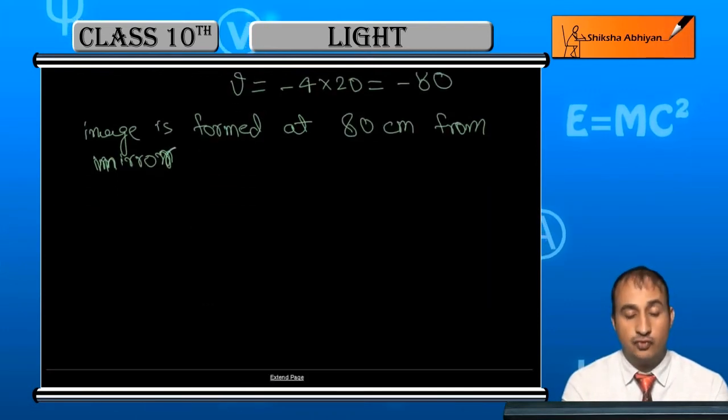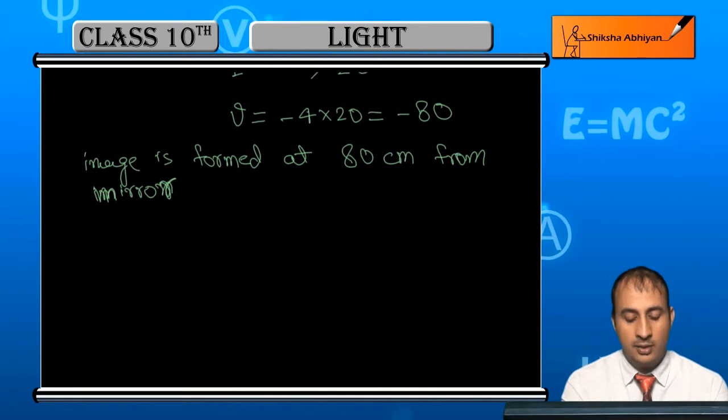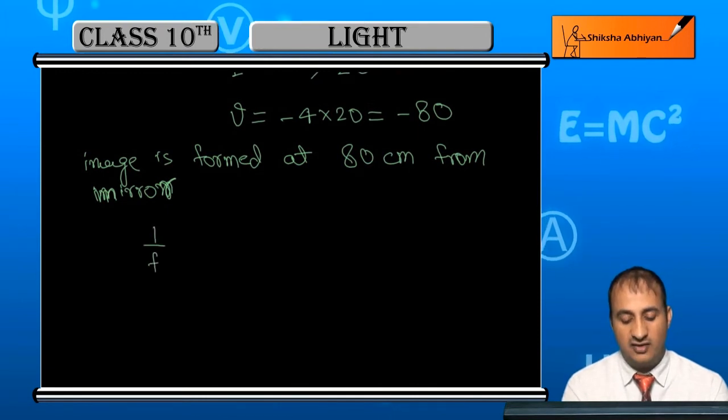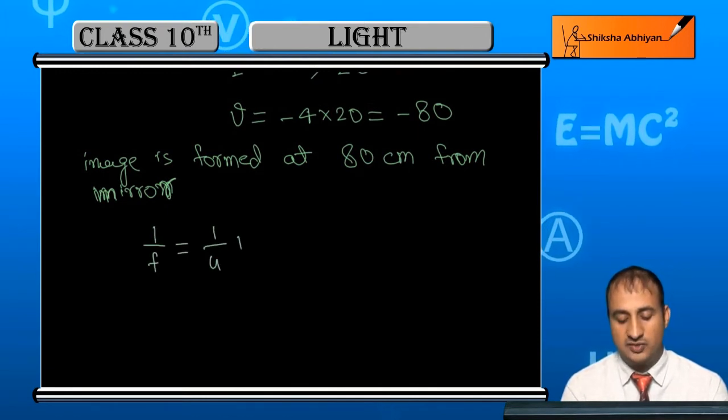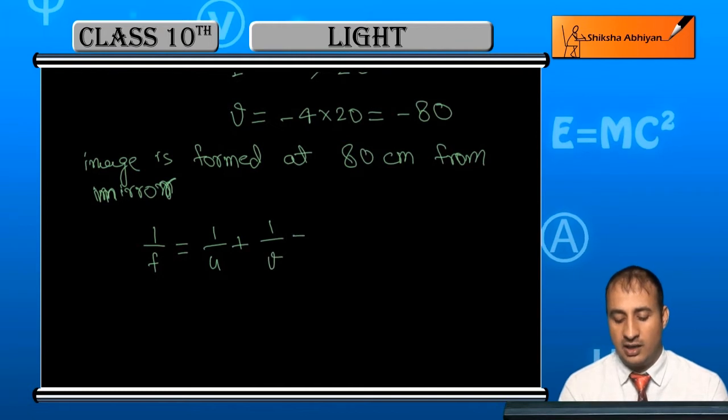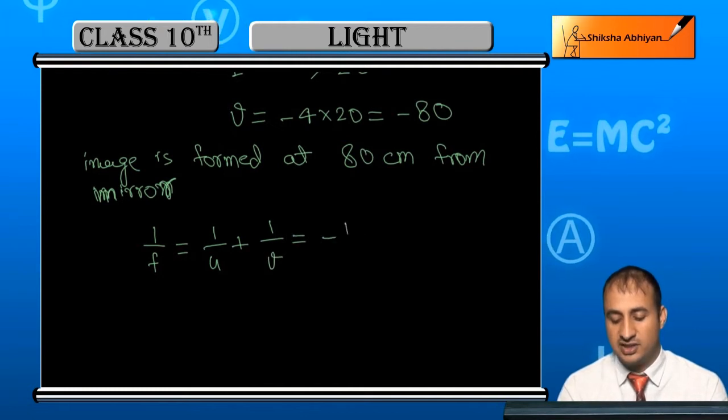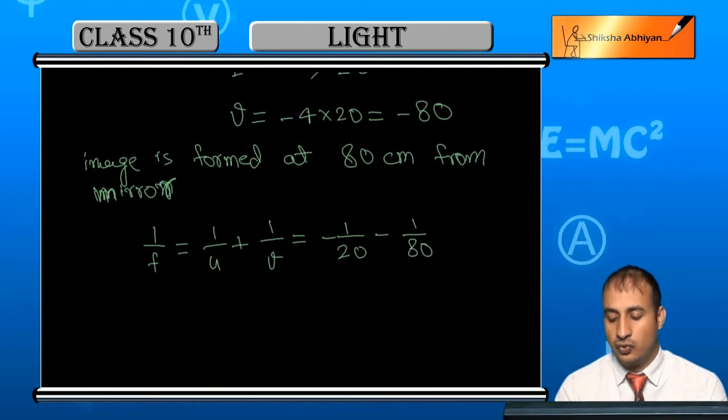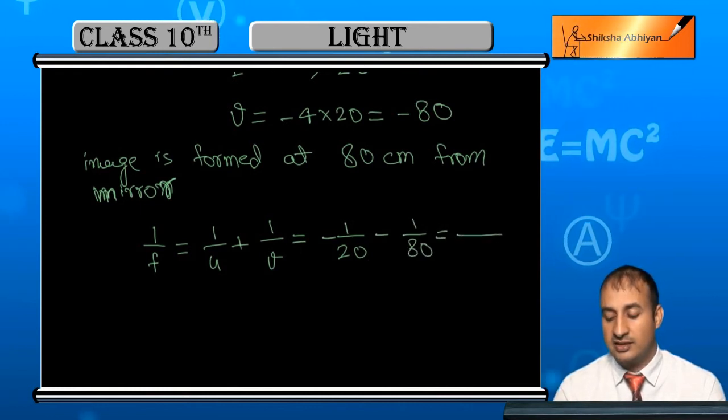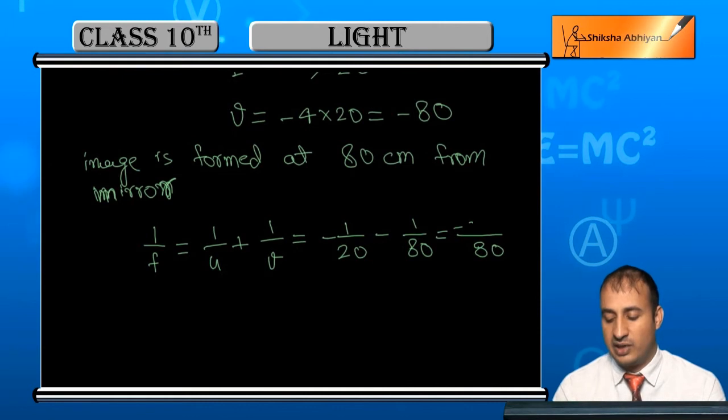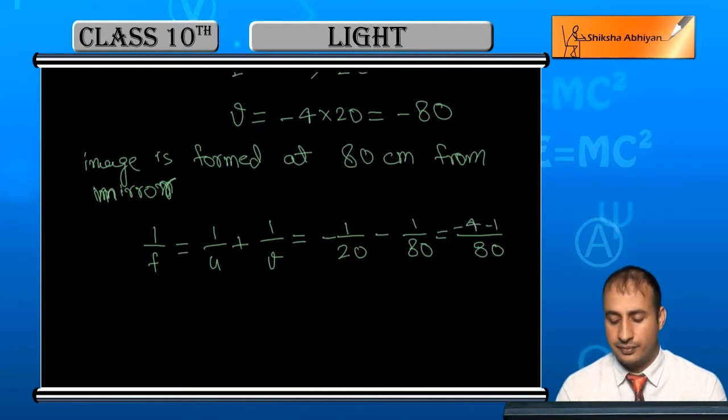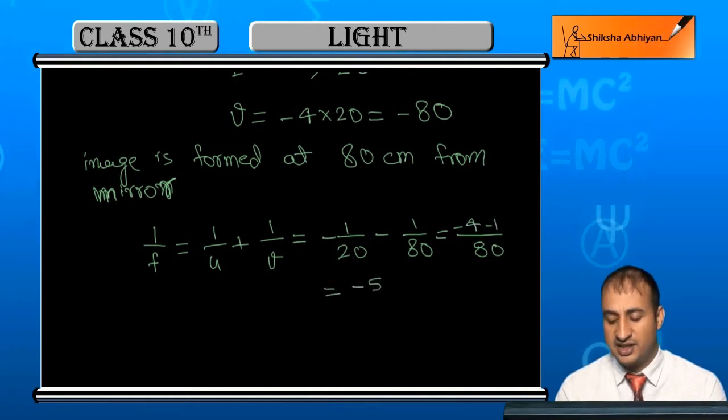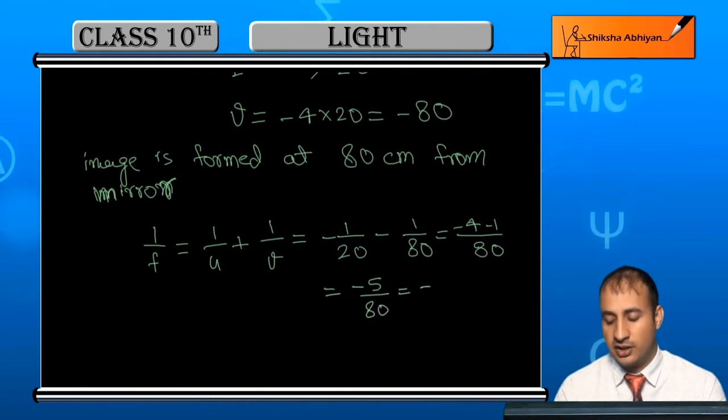Now student, we need to find the focal length. By formula 1/f = 1/u + 1/v, where u is -20 and v is -80. Taking LCM, this is -1/80 + (-4)/80, which equals -5/80.